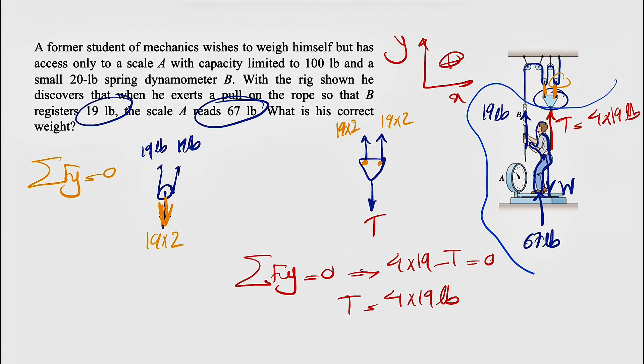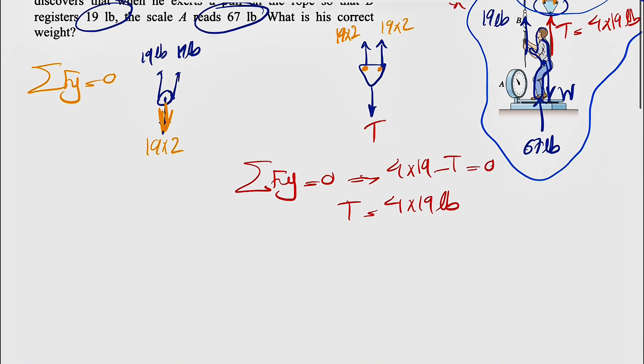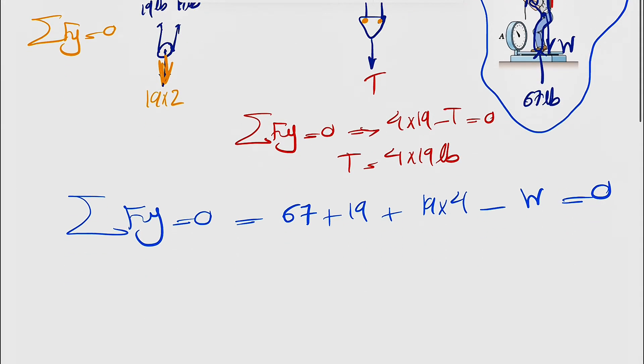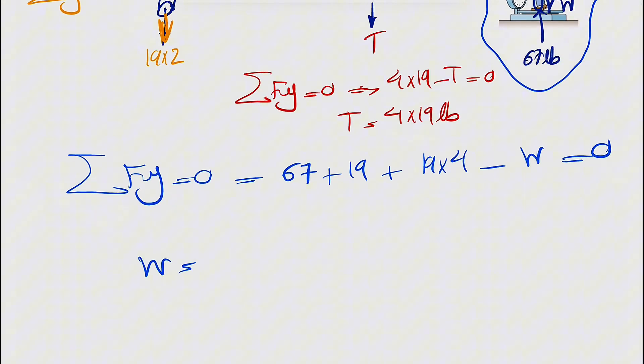19 lb. Now that we have this, if we get back to the free body diagram of the person, we do sum of all forces in y-direction equals zero. We have 67 lb which is the scale reading, plus 19 which is the force at point B, plus 4 times 19 (the tension in the cable), minus the weight equals zero. This gives us the weight which is 19 times